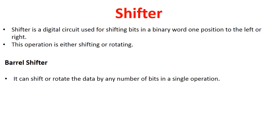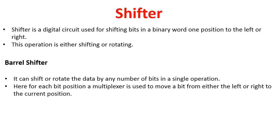Now, the difference between a simple shifting operation and a barrel shifter is: a simple shifting operation can only shift or rotate data one time in a given operation. However, a barrel shifter can shift by multiple positions in a single operation. This is the key difference between a simple shifter circuit and a barrel shifter circuit.